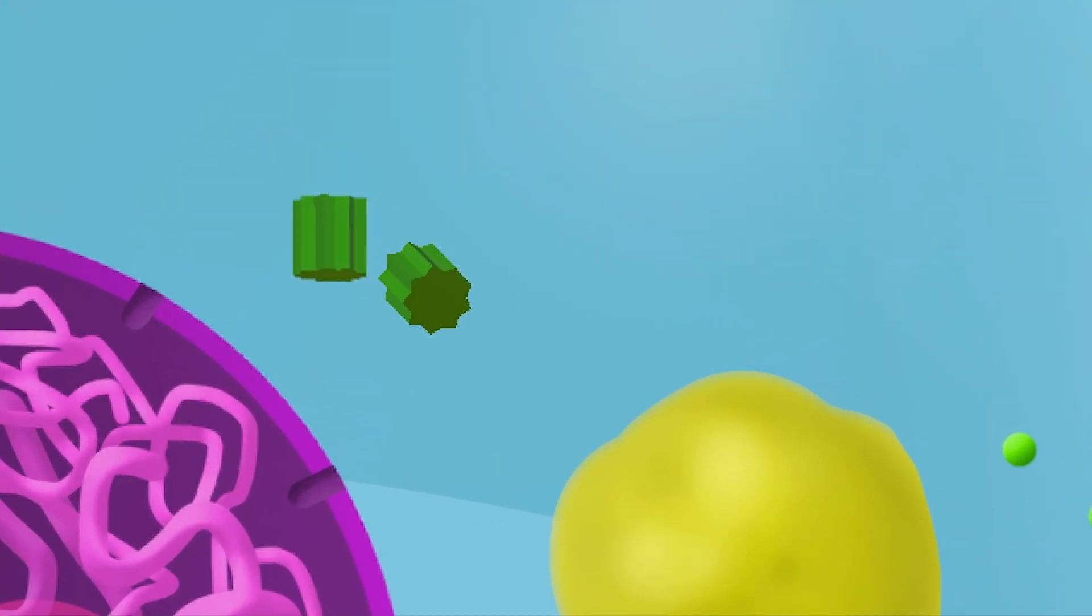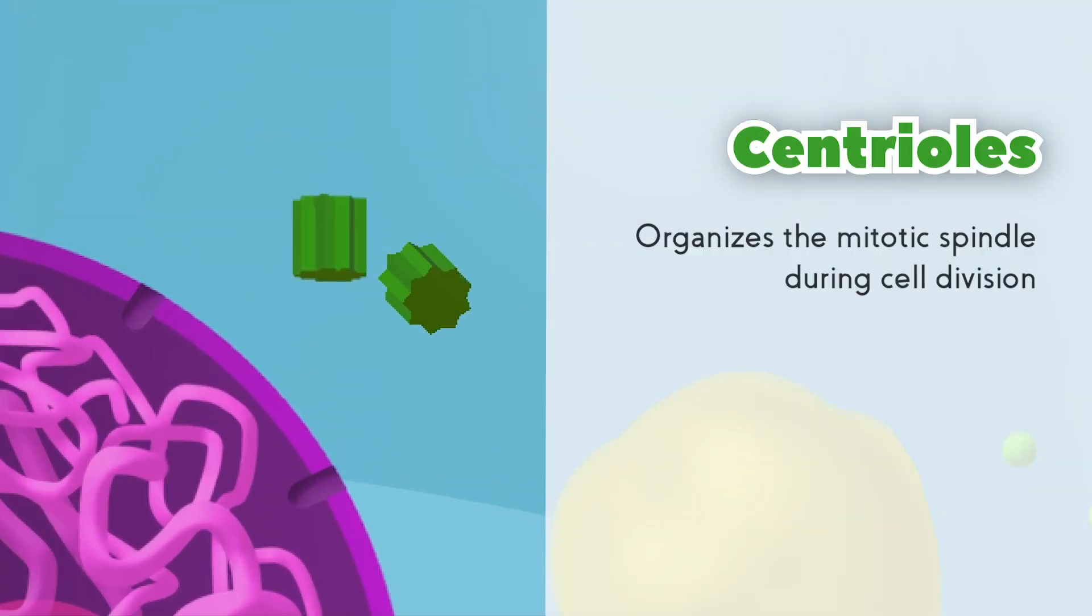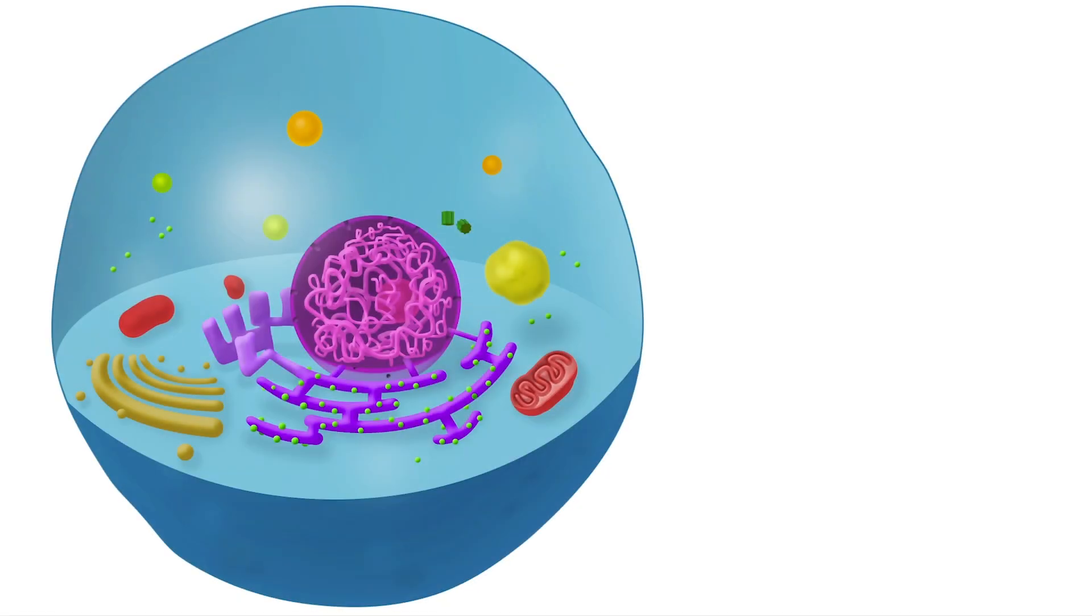And finally, this couple of green structures are called centrioles. They are involved in cell division. That's it for today. Don't forget to like and subscribe, and I'll see you next time.